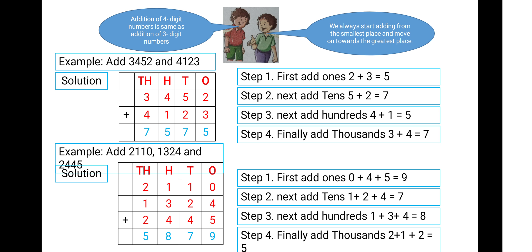The first example in front of you: add 3,452 and 4,123. You can see step by step. Step 1, first add the 1's: 2 plus 3 is equal to 5. In Step 2, add the 10's: 5 plus 2 is equal to 7. In Step 3, add the 100's: 4 plus 1 is equal to 5.